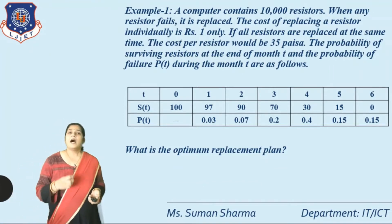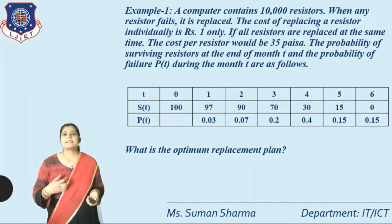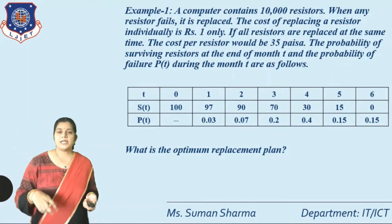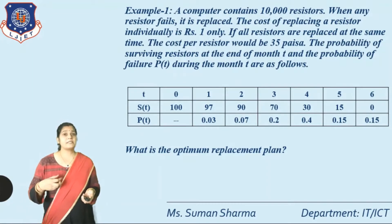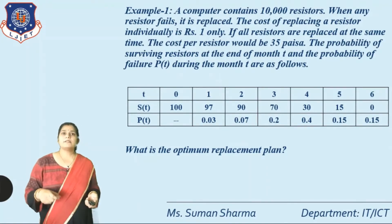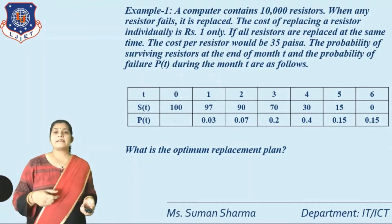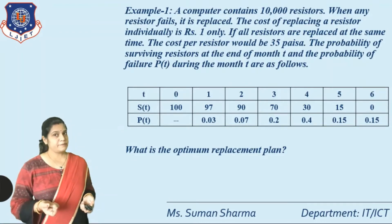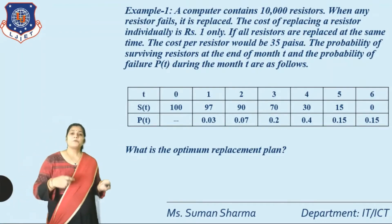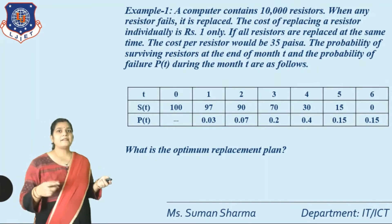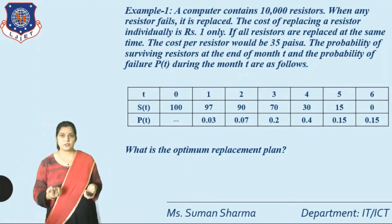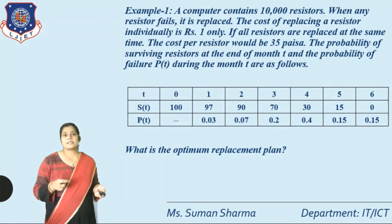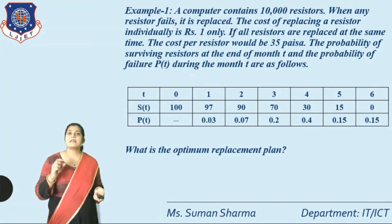If all registers are replaced at the same time — that means replaced in group form — the cost per register would be 35 paisa. So individually the cost is rupees 1, but in group form the replacement cost is 35 paisa.